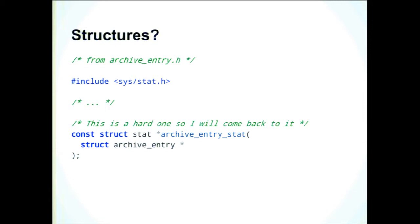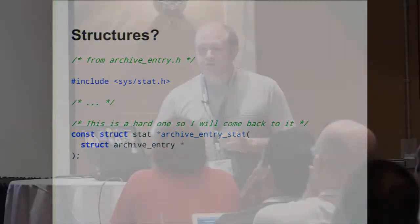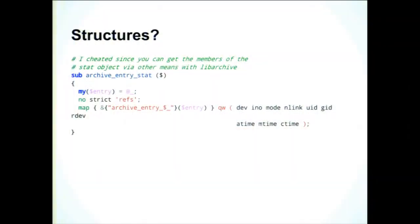Integers and pointers are mostly what I've showed you so far, and they're pretty simple — but what about structures? Libarchive uses mostly opaque pointers, but in a couple of places it does reuse system structures to communicate with the calling code. Like the archive_entry_stat function — it works just like the system stat, except instead of returning statistics on a file in the file system, it returns statistics on a file in an archive member. To implement that, I cheated: libarchive provides an interface to all those statistics members separately, so I call them one at a time, group them as a list, and send them back.